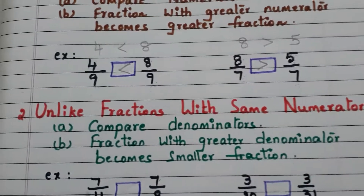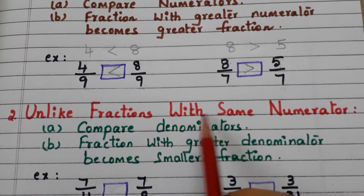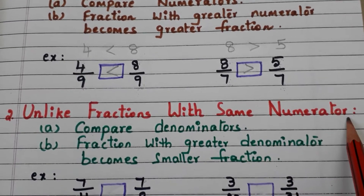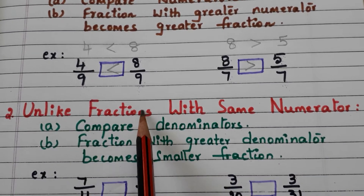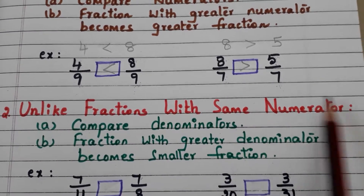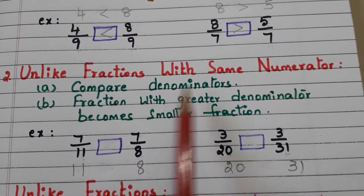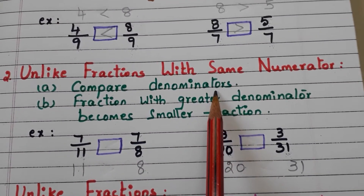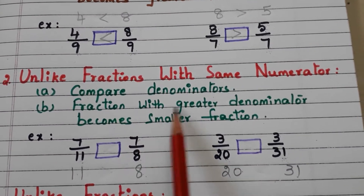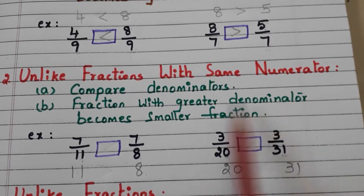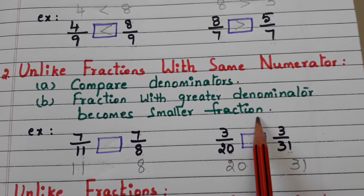Now let us go to unlike fractions with the same numerator. When unlike fractions with the same numerator are to be compared, first we have to compare the denominators. The fraction with the greater denominator becomes the smaller fraction.